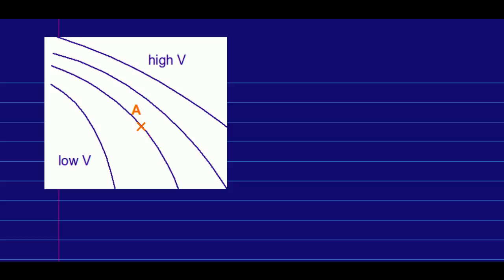So here's a point A where we wish to know the E field, and let's say we know the potential in this region. So here's a schematic set of equipotential curves, and it's high potential over here and low potential over here. So we know in this diagram the E field would be pointing perpendicular to the equipotential curves and from high potential to low potential.